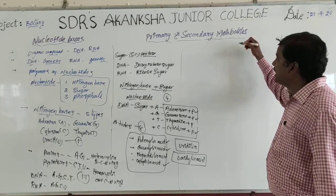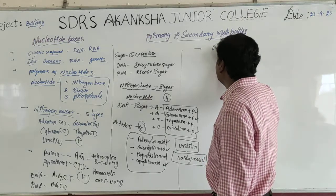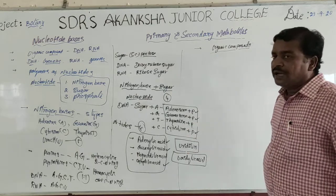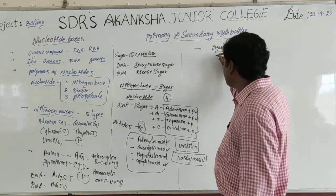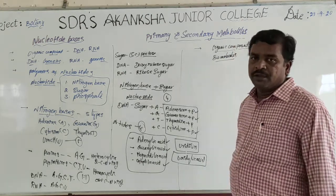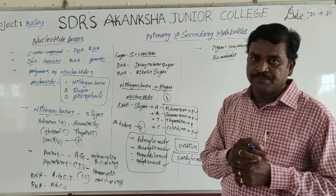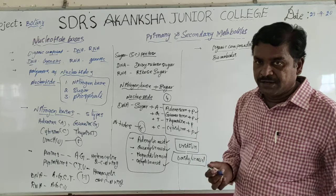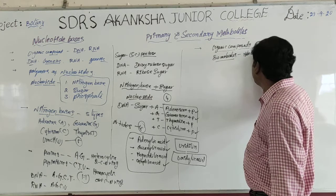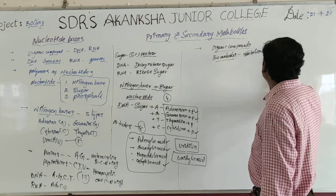Now coming to primary and secondary metabolites. Students, every organism is represented by many organic compounds — many organic compounds. All these organic compounds are also called biomolecules. These biomolecules are interconvertible and are changing to some other and also reorganizing from other compounds. All these biomolecules basically undergo metabolism, so they are also called metabolites.